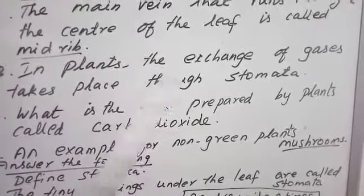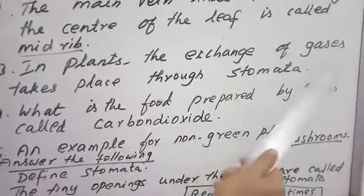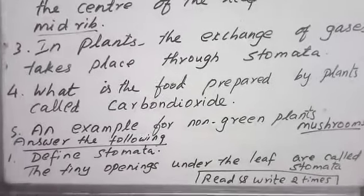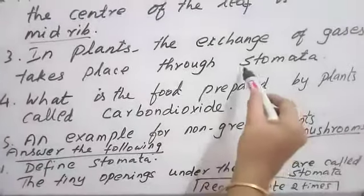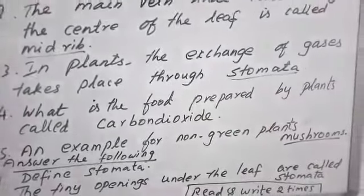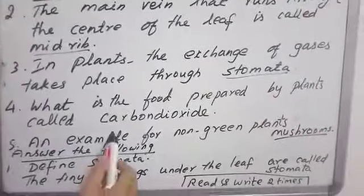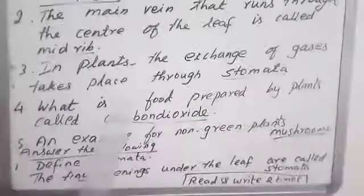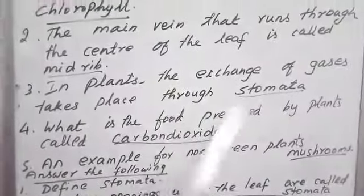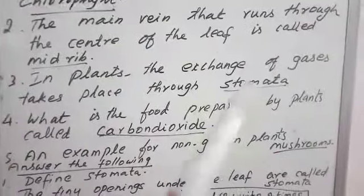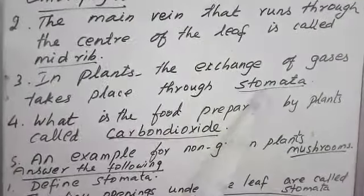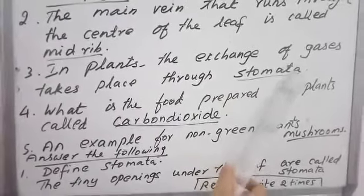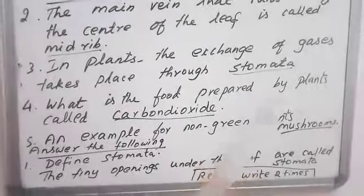In plants, the exchange of gases takes place through stomata. The carbon dioxide will be taken in and the oxygen will be released through stomata.